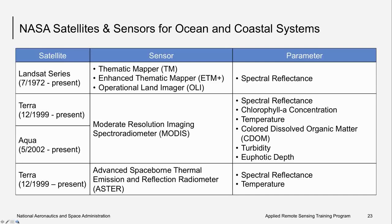The Terra and Aqua satellites each host a Moderate Resolution Imaging Spectrometer, or MODIS, which senses both reflected visible radiance and emitted thermal energy. MODIS is used for land, ocean, and atmospheric applications, and is used to infer several parameters for understanding ocean biology, carbon dynamics, and circulation.